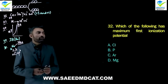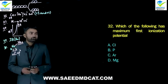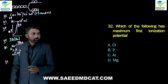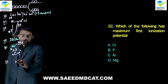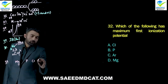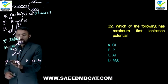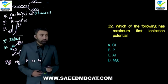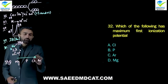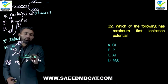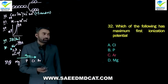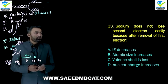Question 32: Which of the following has maximum first ionization potential? The options — magnesium, phosphorus, chlorine, argon — are all third period members. Within the same period, ionization potential increases left to right. Argon is the furthest right, so it has the highest ionization potential. Charlie option: argon.